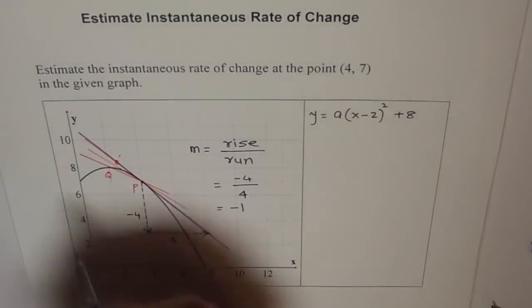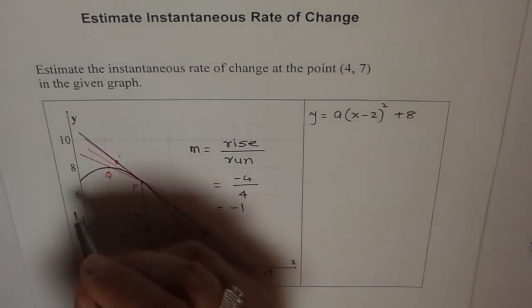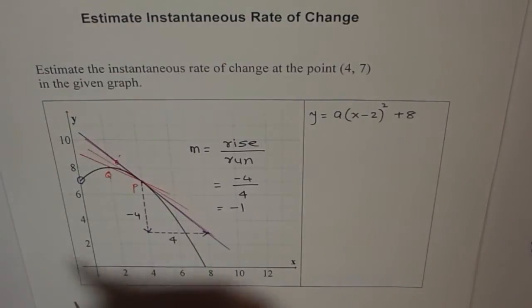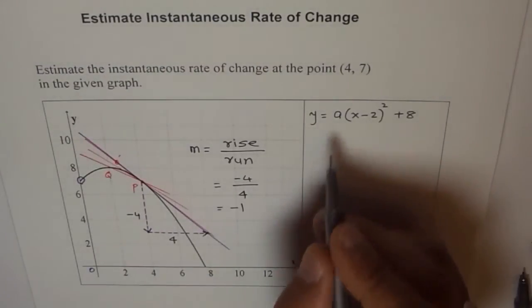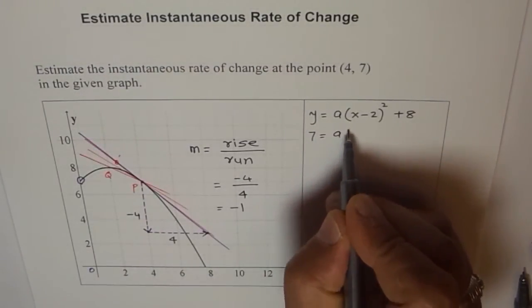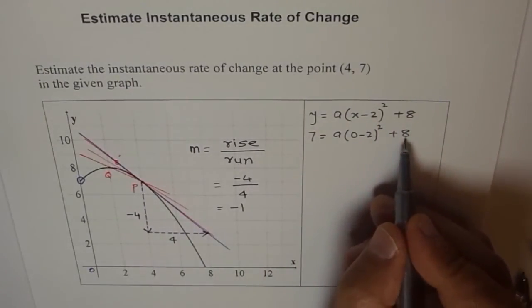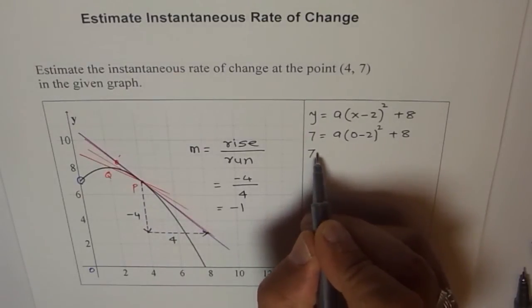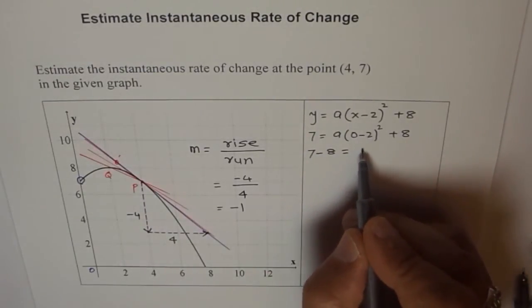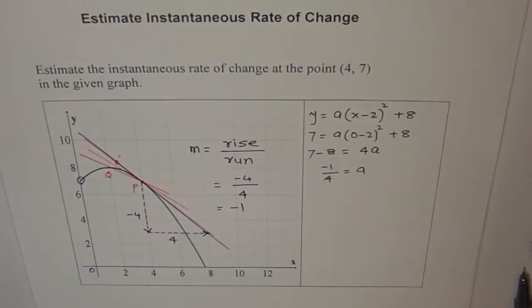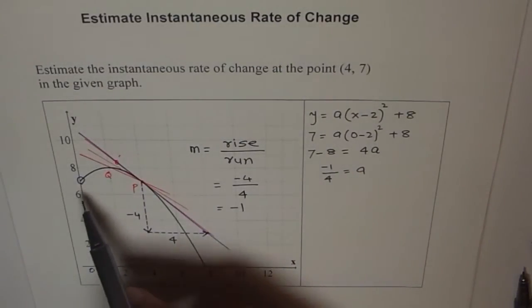To find the value of a, we need a good point. And the best point for us is the y-intercept, which is (0,7). So we'll plug in 0 for x and 7 for y and get the value of a. So we get 7 equals to a times (0 minus 2) squared plus 8. And when we bring 8 this side, it becomes 7 minus 8 equals to this square is 4, 4a. And this is minus 1. And when we divide by 4, we get a equals to minus 1 over 4.